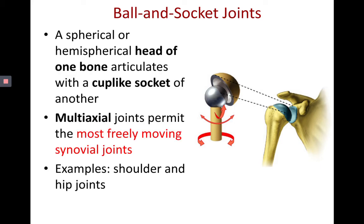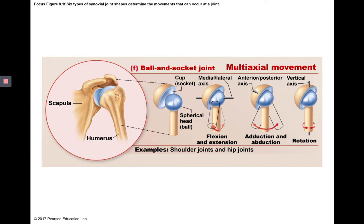Ball and socket joints have a ball-shaped structure fitting into a cup-like socket. These are multiaxial joints and the most freely movable type of synovial joint. The shoulder and hip joints are two examples. Because they are multi-axial, they allow rotation, adduction, abduction, flexion, and extension. The glenohumeral joint, for example, has the head of the humerus fitting in the glenoid cavity of the scapula — a very shallow joint held together primarily by muscles and ligaments, making it highly mobile. The hip joint has a much deeper cup.